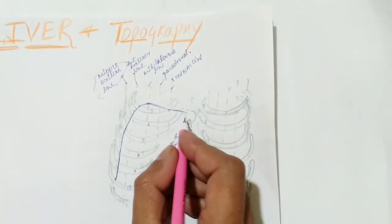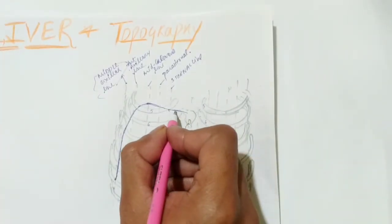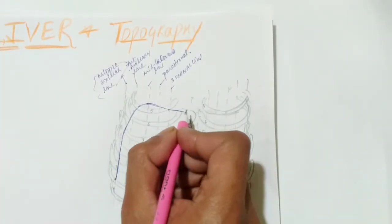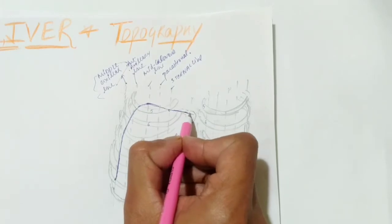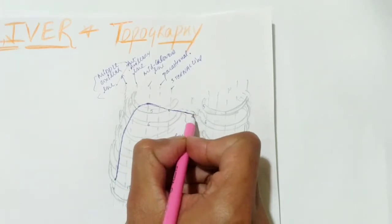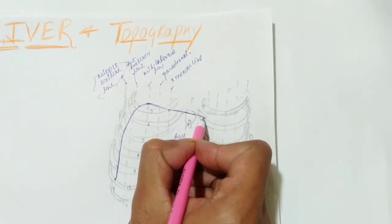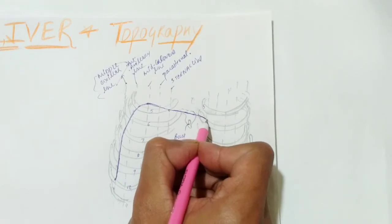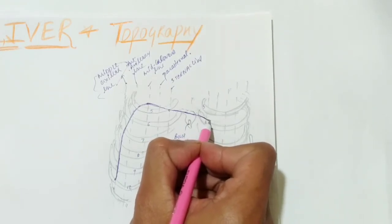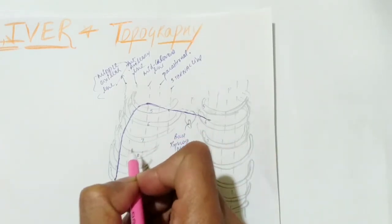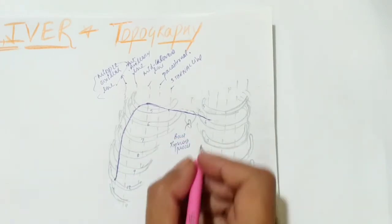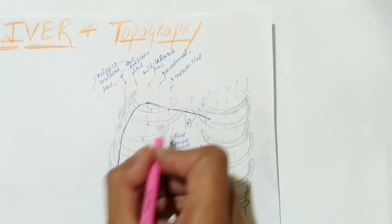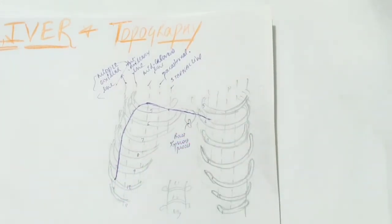The upper boundary crosses above the base of the xiphoid process, transects the sternum, and reaches your 5th intercostal space, just above your 6th rib. There this upper boundary ends. So the upper boundary ends in the 5th intercostal space, transecting the sternum over the base of the xiphoid process.